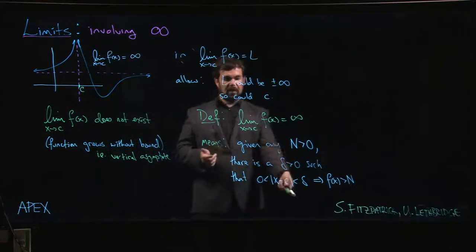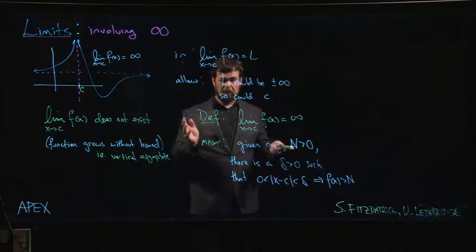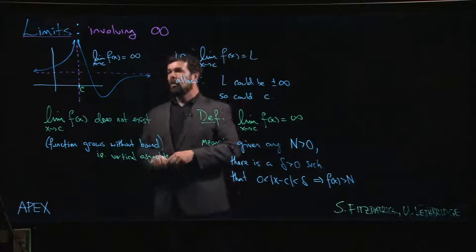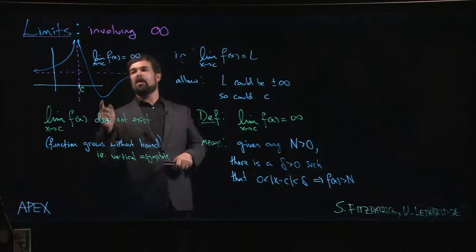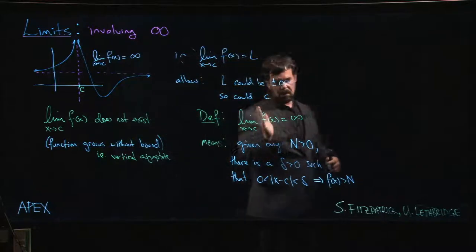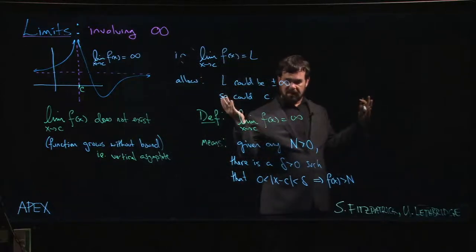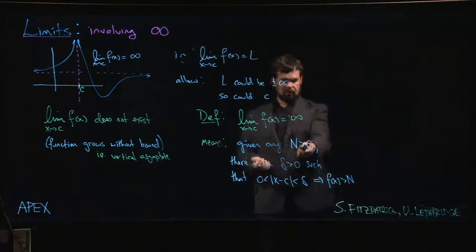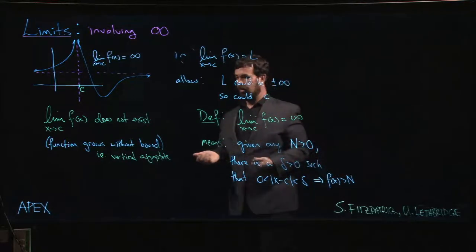There's a number of variations we could make on this. I'm not going to write them all down because I think it's time consuming and they're in the book. If we wanted to talk about the limit being minus infinity, then we choose n to be some big negative number and we try to make f of x smaller than it. N would be less than zero, we just reverse those two inequalities, same story.